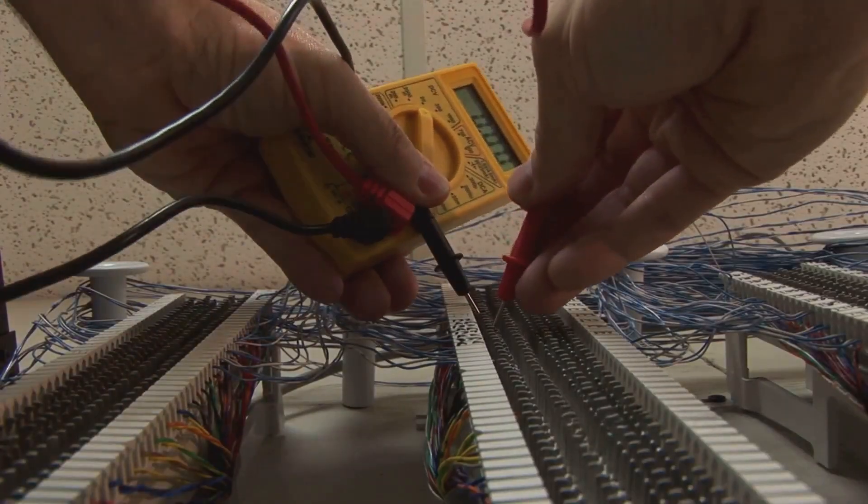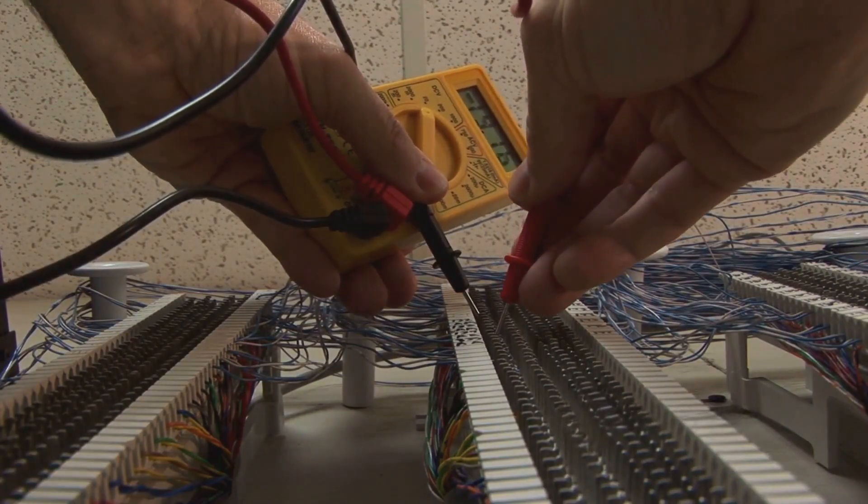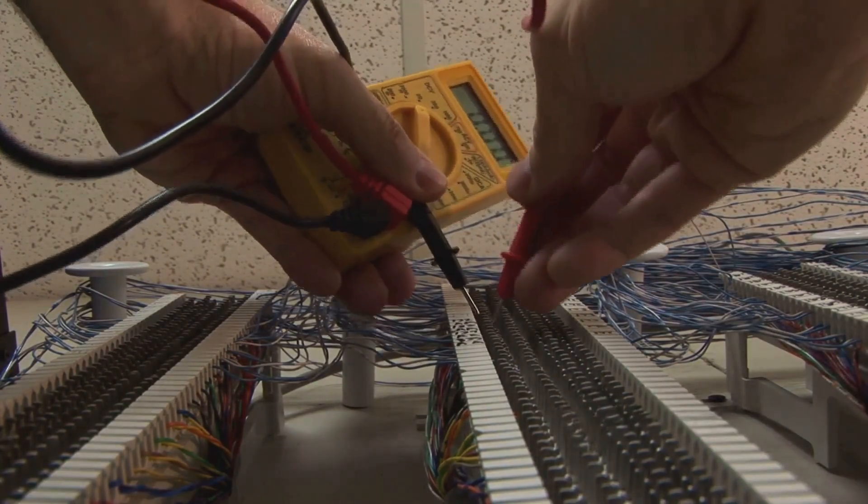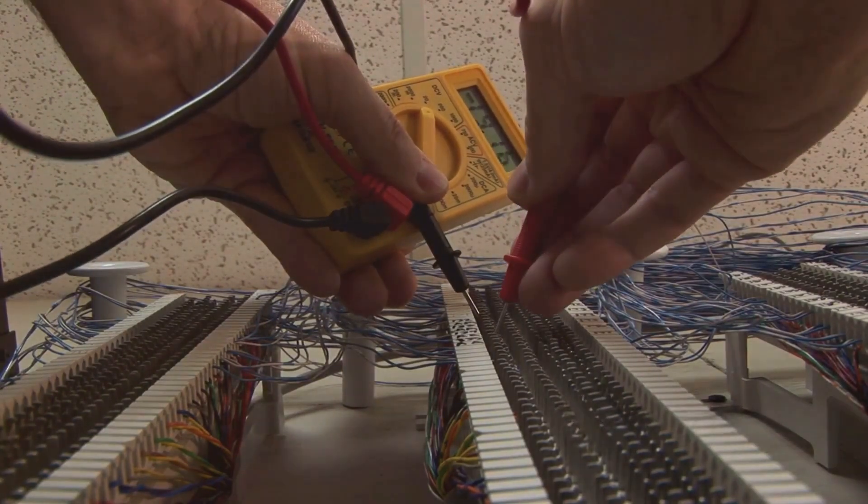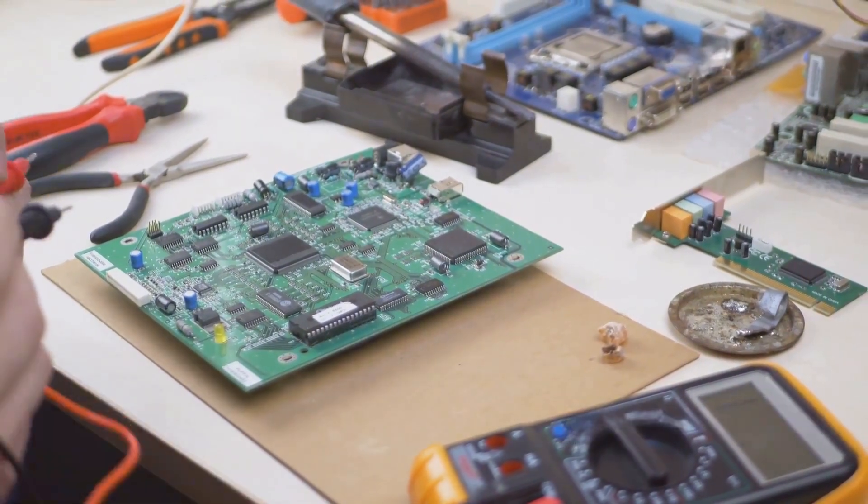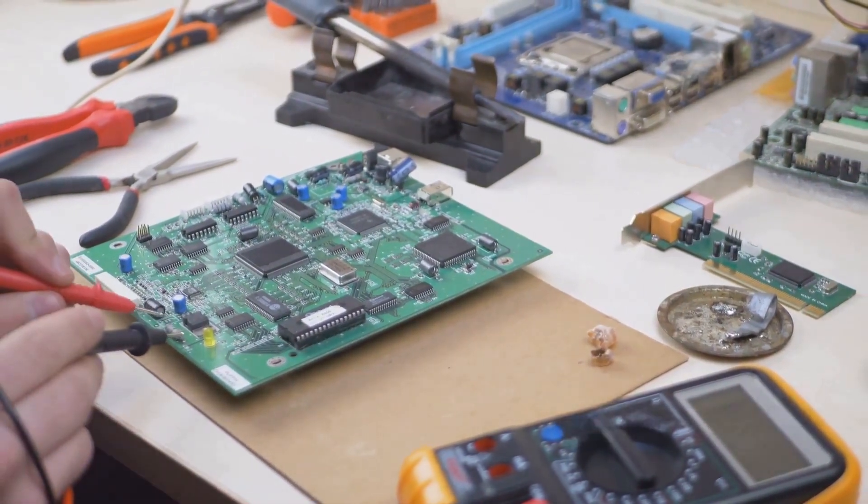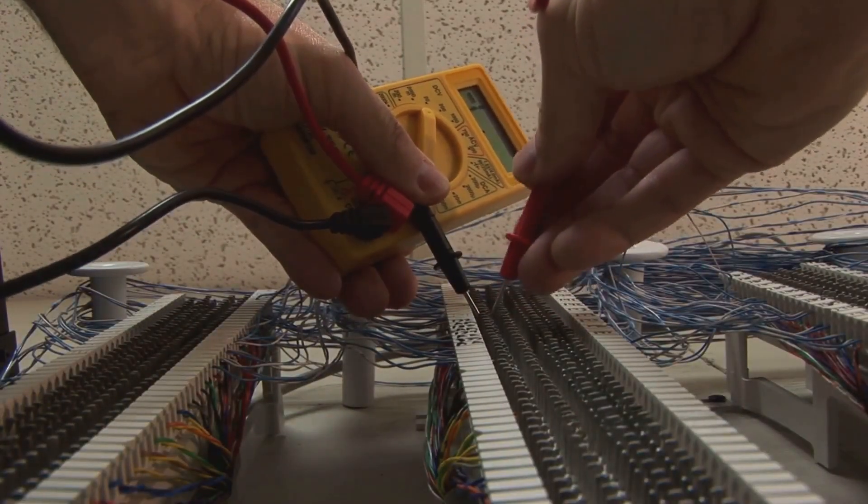Check for any visible damage or wear on the probes and the wires. Look for frayed wires, bent tips, or any other signs of damage. If they look bad, it's time to replace them. Damaged probes can't conduct electricity properly, leading to faulty readings. You can get new probes at any electronics store. Make sure to get the right type for your specific multimeter model. Plug in the new probes and test again. Hopefully this resolves the issue.